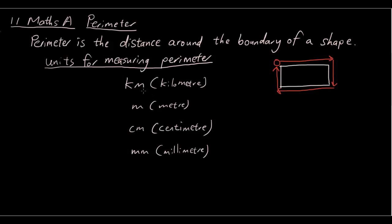Okay, the units for measuring perimeter. Because perimeter is another word for distance, because you're calculating how long it is, you're measuring how long it is. So there are four different units. The biggest one is kilometer.